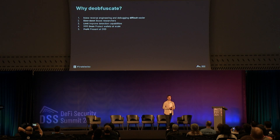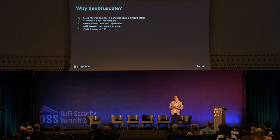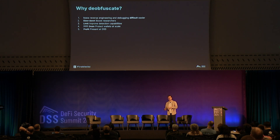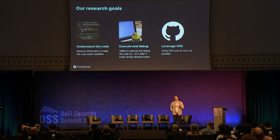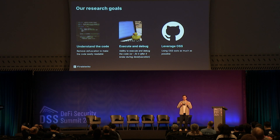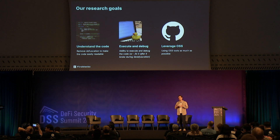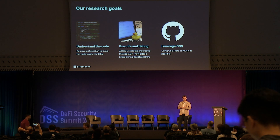So why deobfuscate? Well, the exact opposite. We want to make reverse engineering and debugging really easy, boost researchers, make our detections better, protect wallets at scale. In terms of goals for our research, we have three: we want to achieve clarity — removing all the obfuscation and having the code easy to read. But that's not enough; we also want to execute and debug the code, because we don't believe in just static analysis. And finally, we want to leverage open source wherever possible, because we don't have to reinvent the wheel.